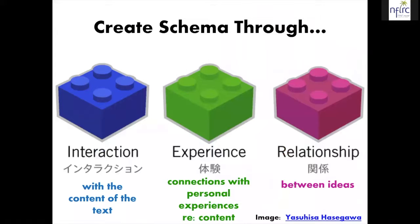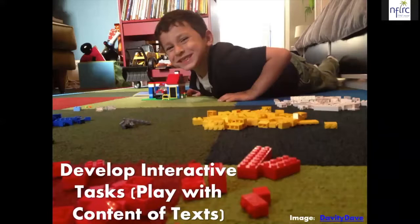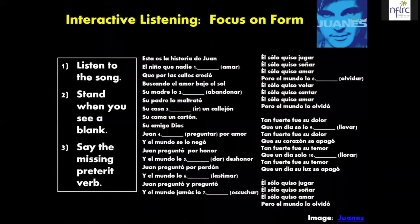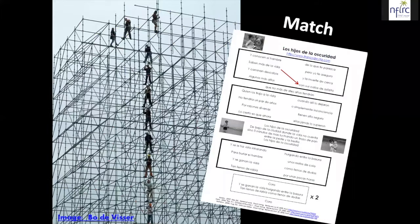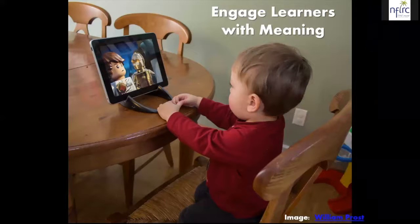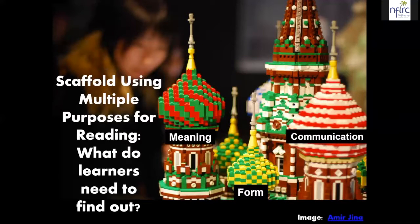To summarize: we can create schema through interaction, experiences, and helping learners see relationships between ideas. We can also develop interactive tasks that help learners play with the content of the texts — for example, having them grab individual words, listen and pop up out of their seats when they come to a blank and conjugate those verbs if we're focusing on form, having them match the first half of a sentence to the second half while listening to a song, having them sequence texts or hold up pictures based on what they hear, and engaging them with meaning then form and then using those forms to communicate.